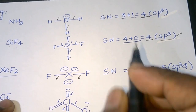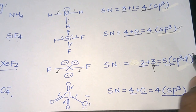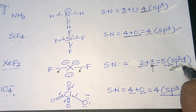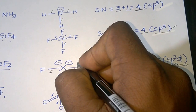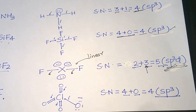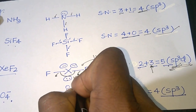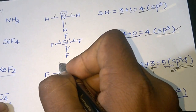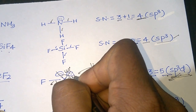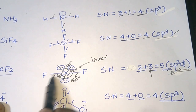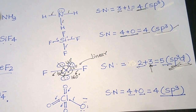There are 2 sigma bonds and 3 lone pairs, giving a steric number of 5, which corresponds to sp3d hybridization, making XeF2 a linear molecule.